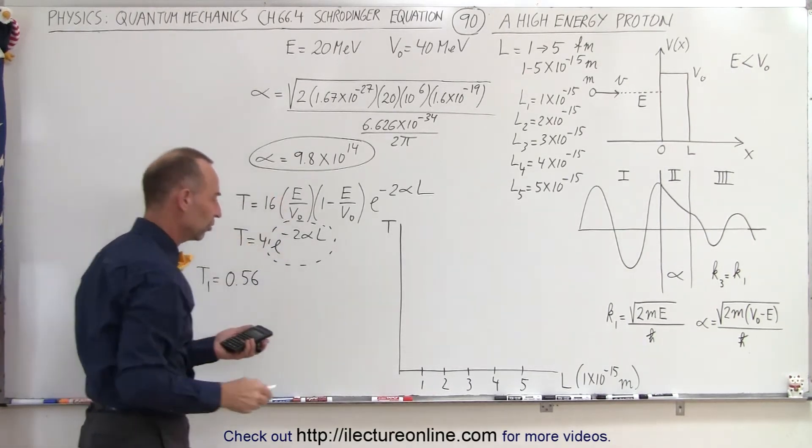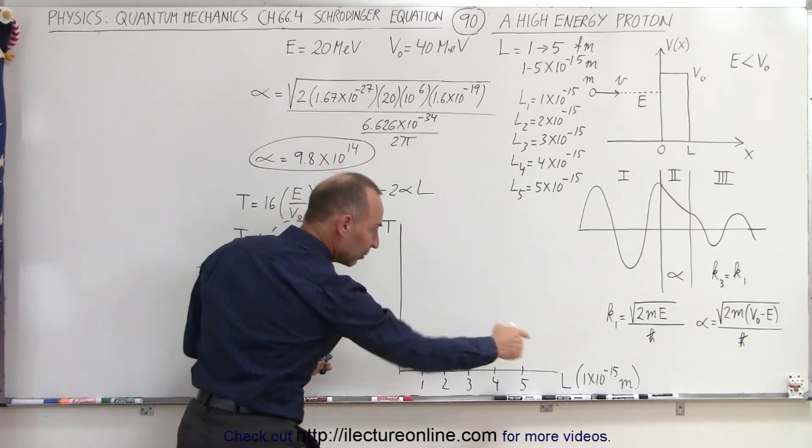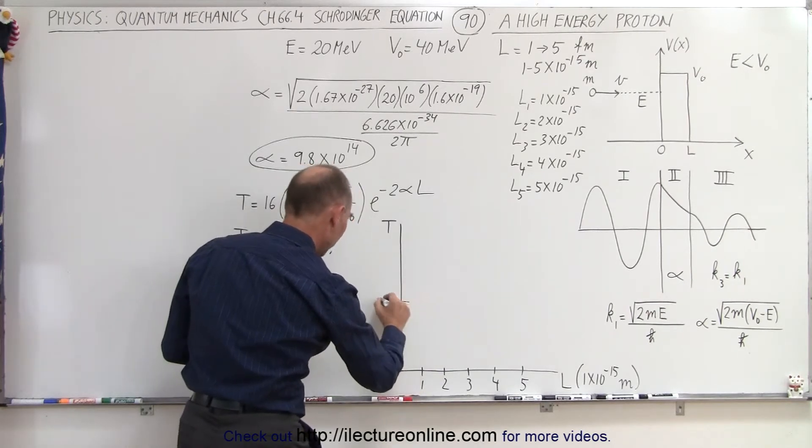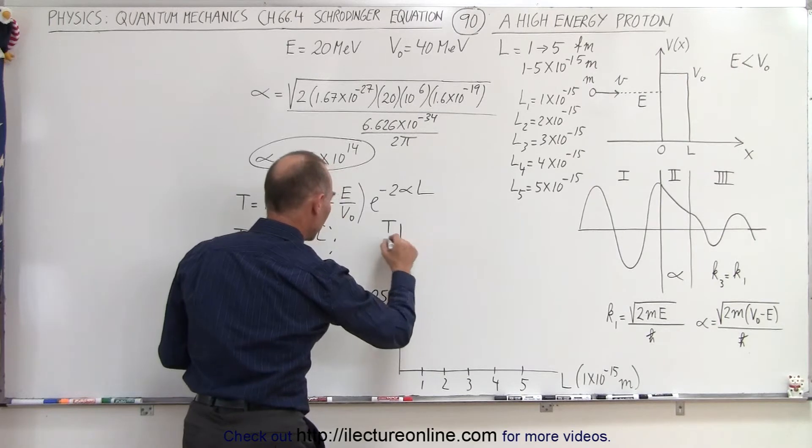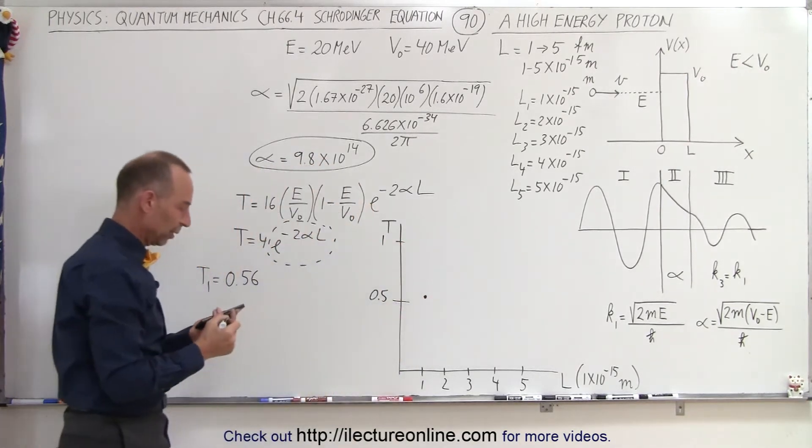Taking of course this portion into account, when L1 is 1 times 10 to the minus 15th, if this is let's say 0.5 and this is 1, notice that it's slightly over half, so it's about right there for the first one.